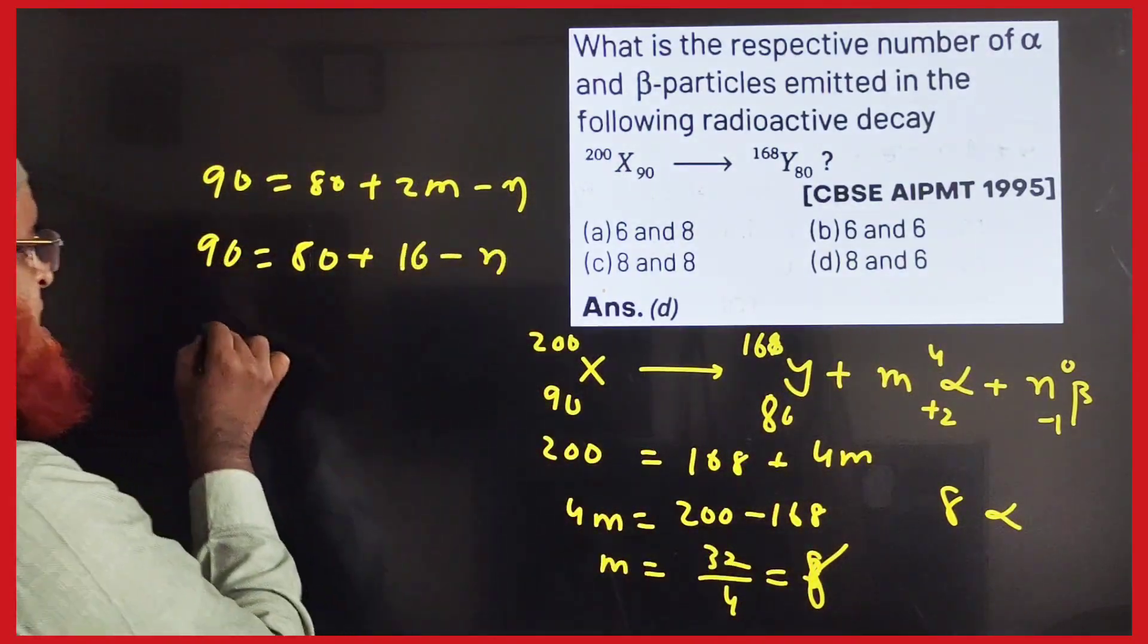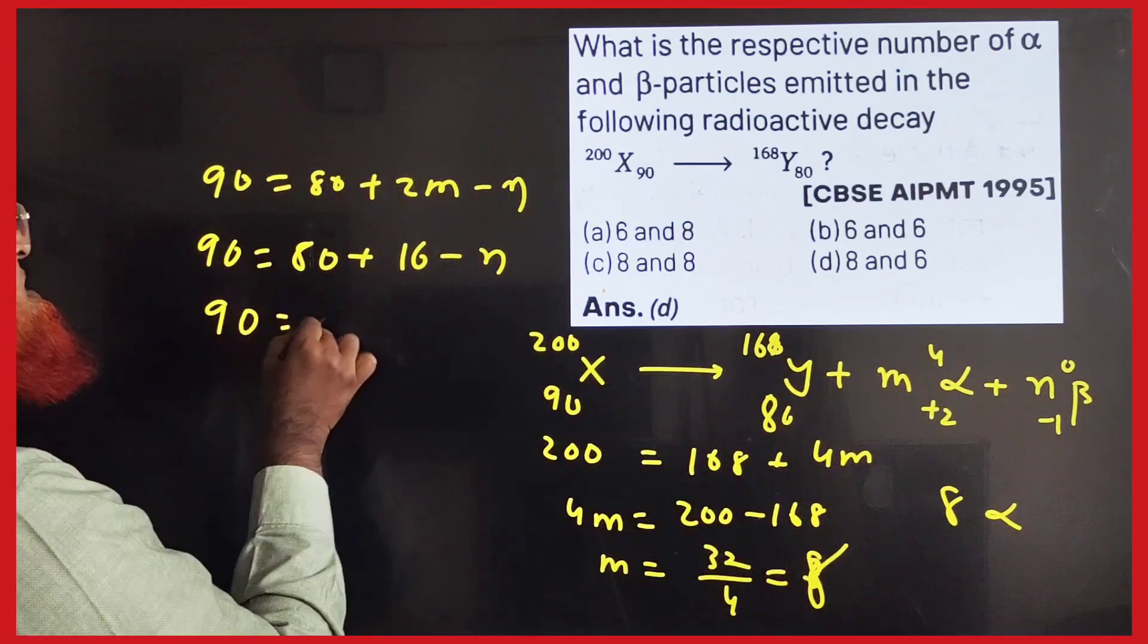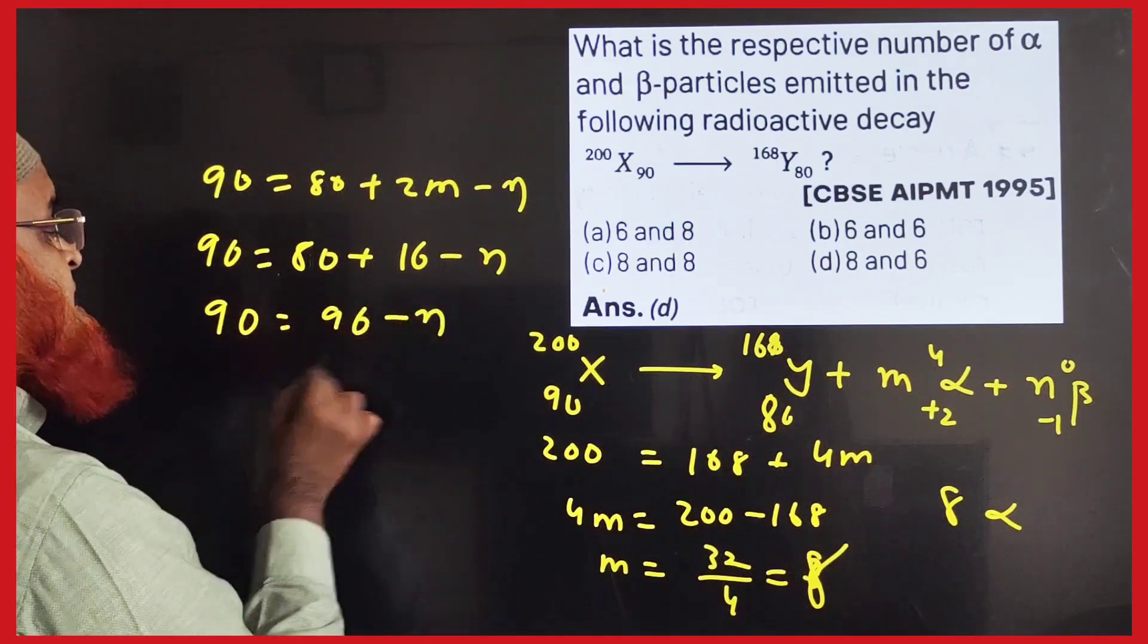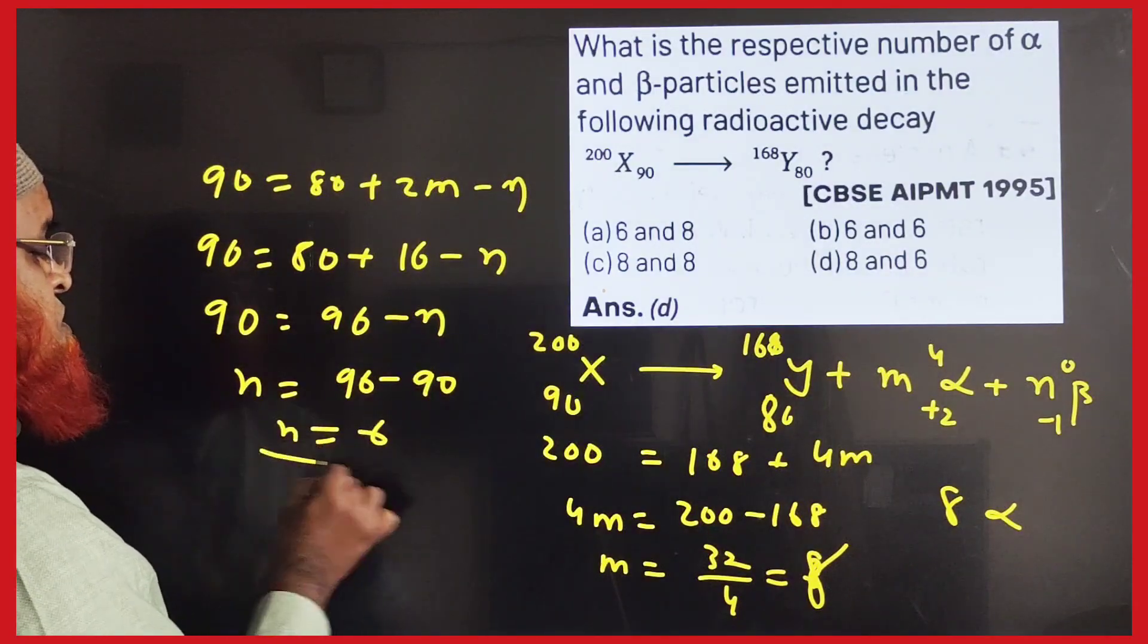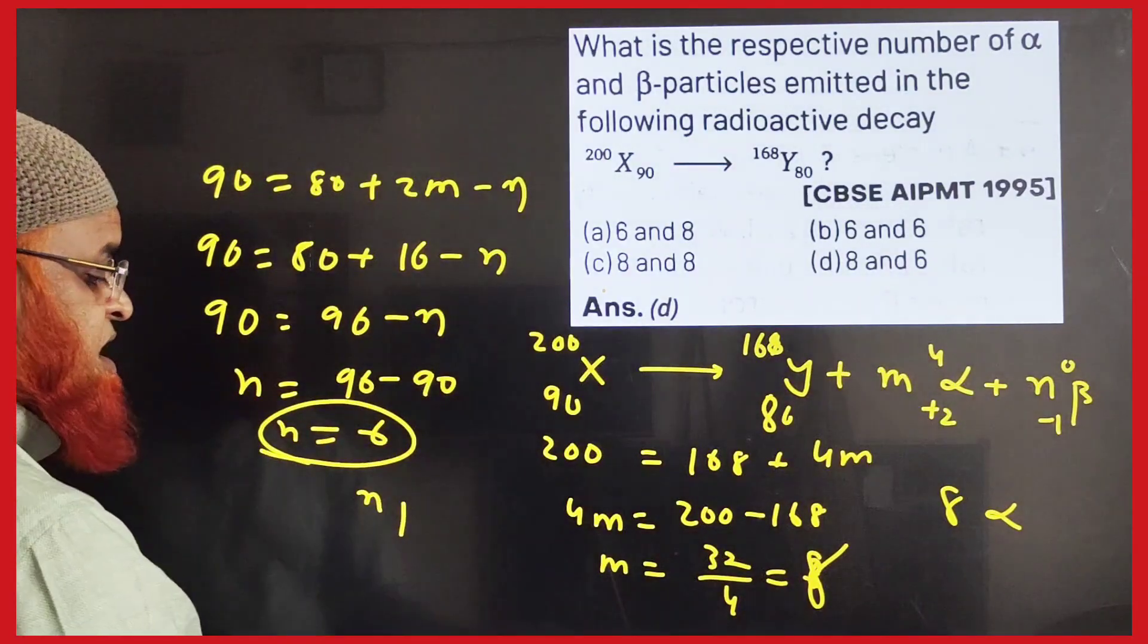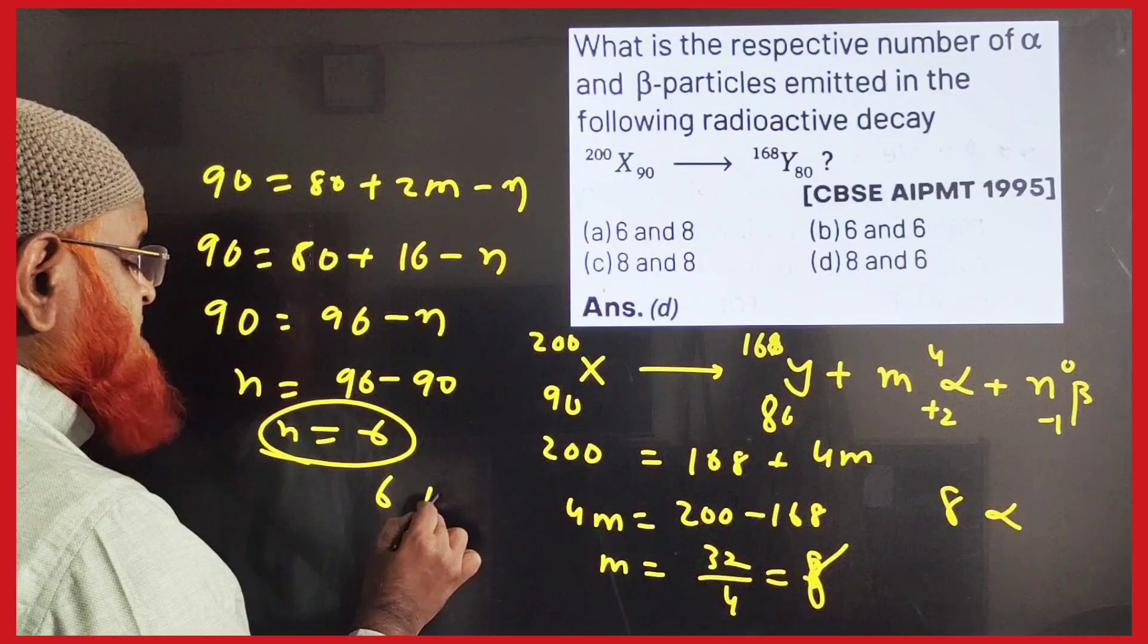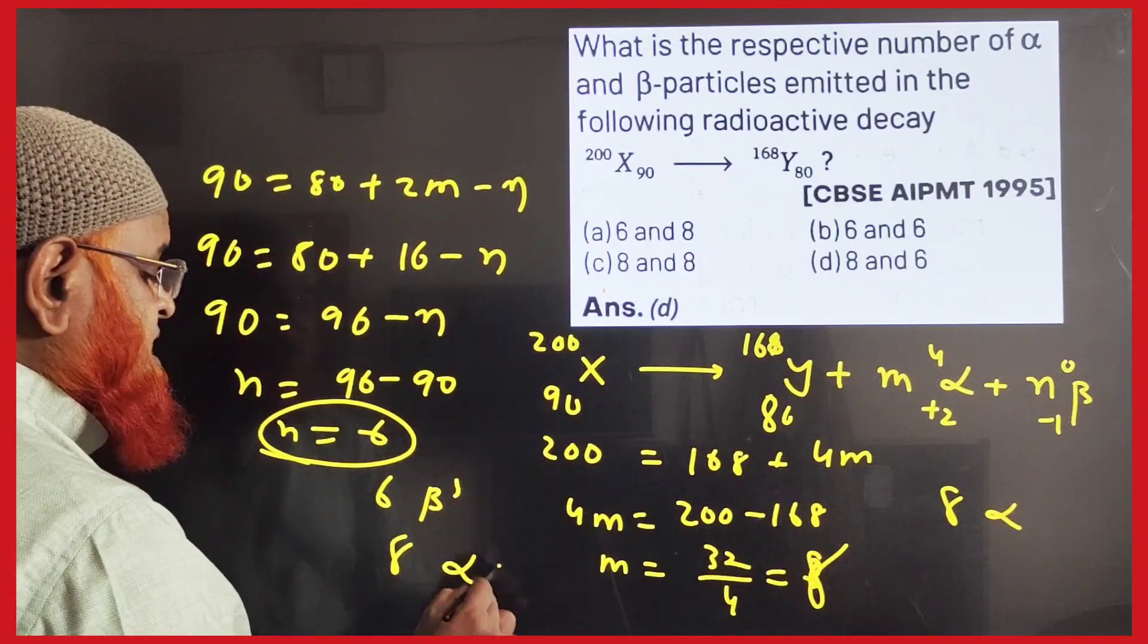minus N. So 90 equals 96 minus N. So N comes to left side: N equals 96 minus 90, that is N equals 6. That means how many? 6 betas and 8 alphas